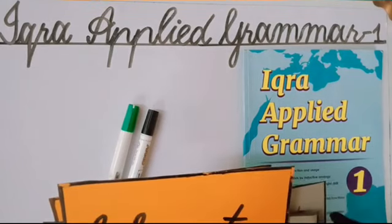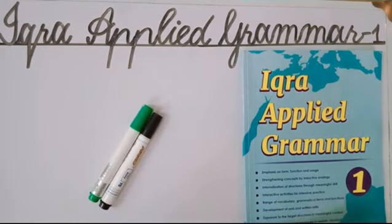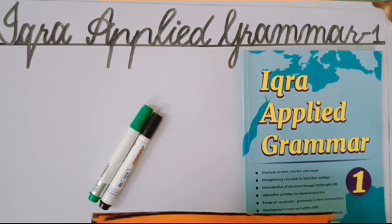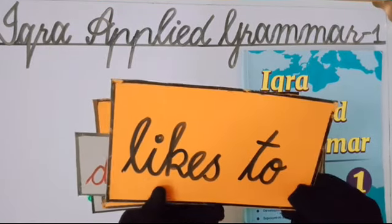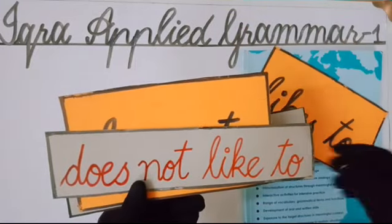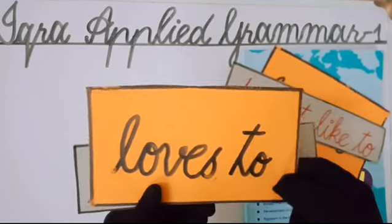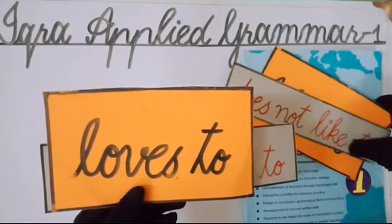When we talk about singular nouns and pronouns, we change 'like to' and 'love to.' 'Do not' is changed to 'does not' — so it becomes 'does not like to.' For 'love to,' it becomes 'loves to' and 'does not love to.' Students, this is a way of learning — if you remember the pattern, you can remember all the forms.